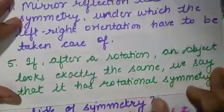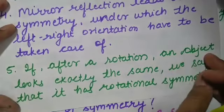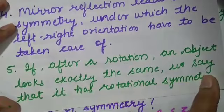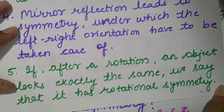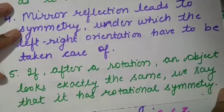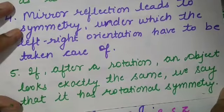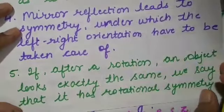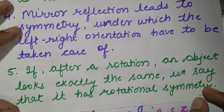Now come to rotational symmetry. Rotational symmetry means that if after a rotation — in a complete revolution or complete turn — an object looks exactly the same, then we can say that the figure has rotational symmetry. An equilateral triangle has rotational symmetry of order 3. That is all about question number 2.